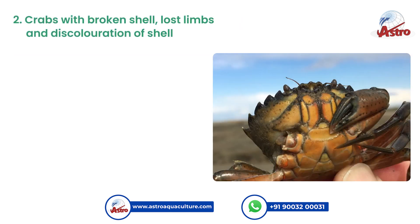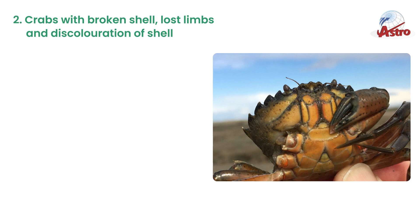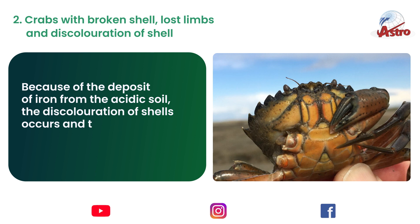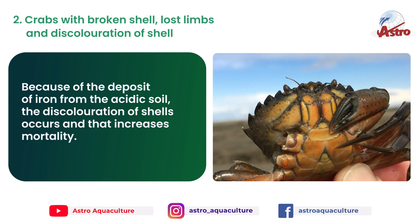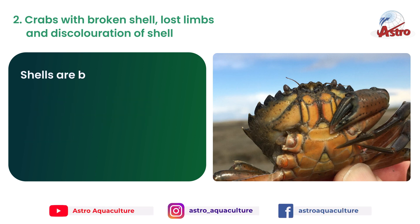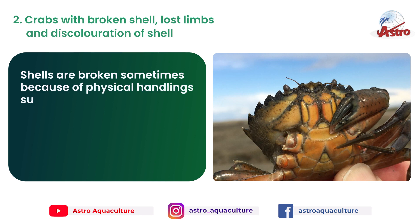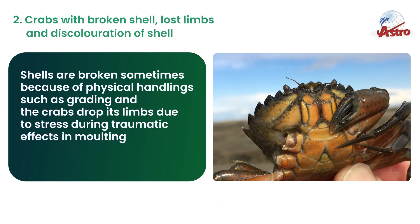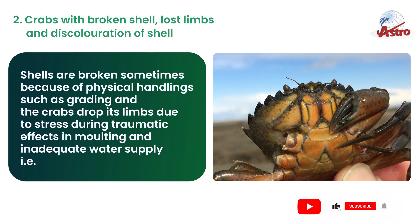Second, crabs with broken shells, lost limbs, and discoloration of the shell. Because of the deposit of iron from acidic soil, discoloration of shells occurs and that increases mortality. Shells are broken sometimes because of physical handling such as grading, and crabs drop their limbs due to stress during traumatic effects in molting and inadequate water supply, i.e., a dry environment.